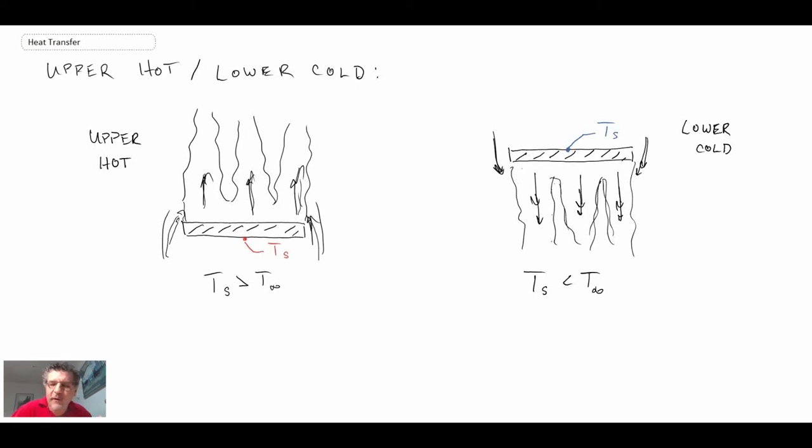There's a range—it's not the exact same number that we had before for 10 to the 9, it's actually 10 to the 7. Let me write out the correlations between the Nusselt and the Rayleigh number.